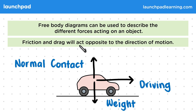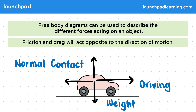Friction and drag will act opposite to the direction of motion. Remember that friction and drag are the resistance to motion due to collisions with air particles, and also surfaces sliding past each other which aren't completely smooth. Friction and drag can be seen on the free body diagram in the opposite direction to the driving force, so these forces are always in the opposite direction to the object's motion.